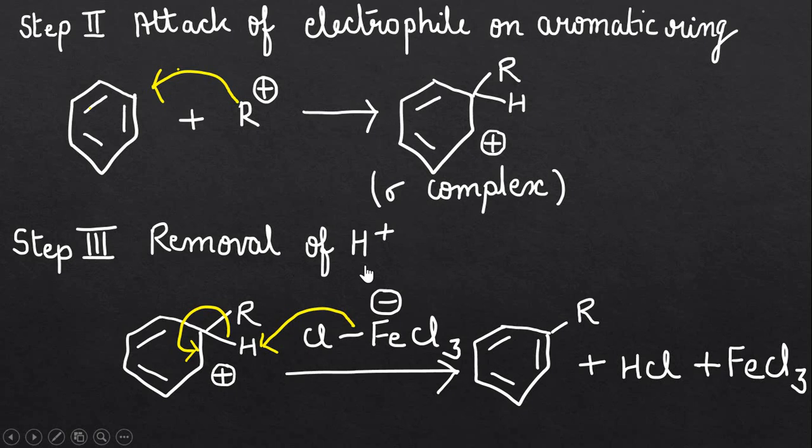This chlorine atom abstracts the acidic proton and we get the double bond in the benzene ring again, and we get the alkylated product. We can say that the hydrogen atom is replaced by this alkyl group, and this is what we call Friedel-Crafts alkylation reaction.